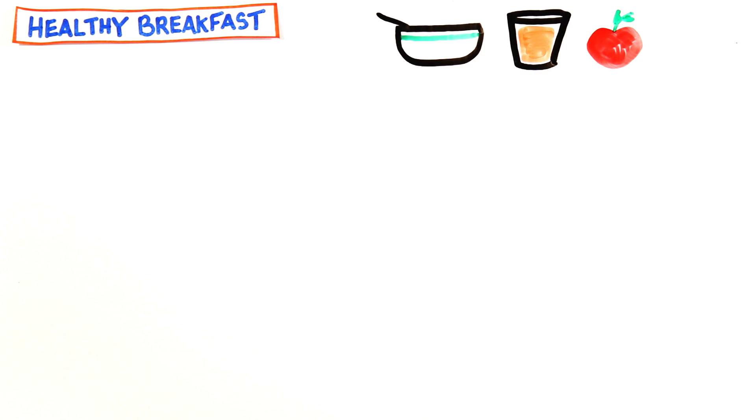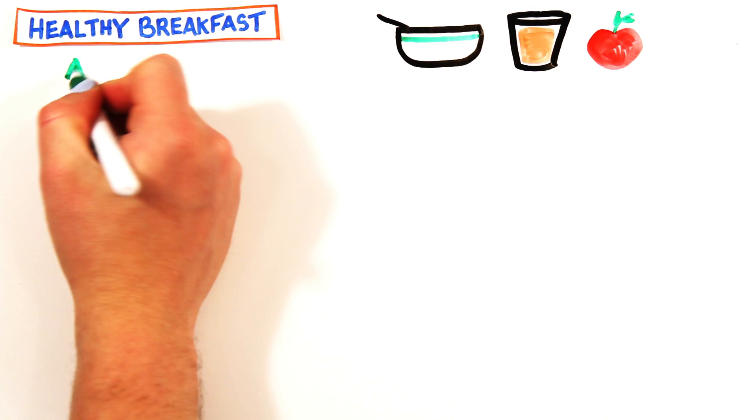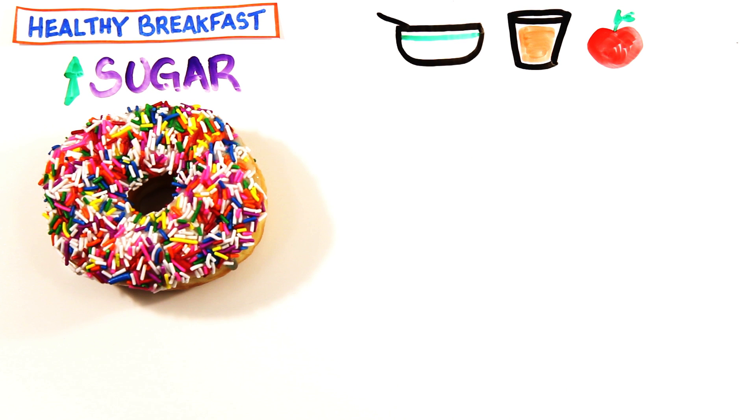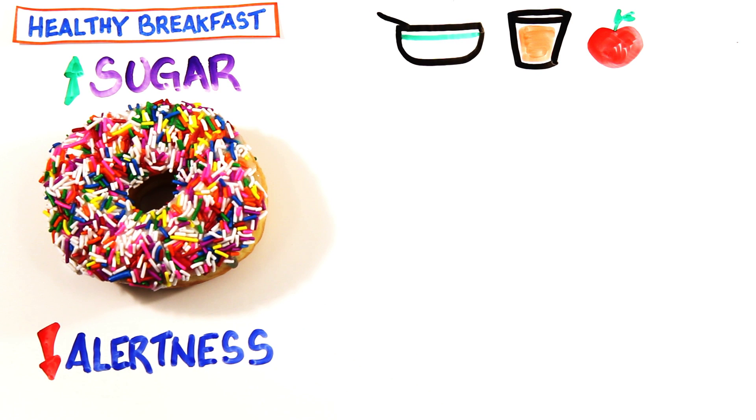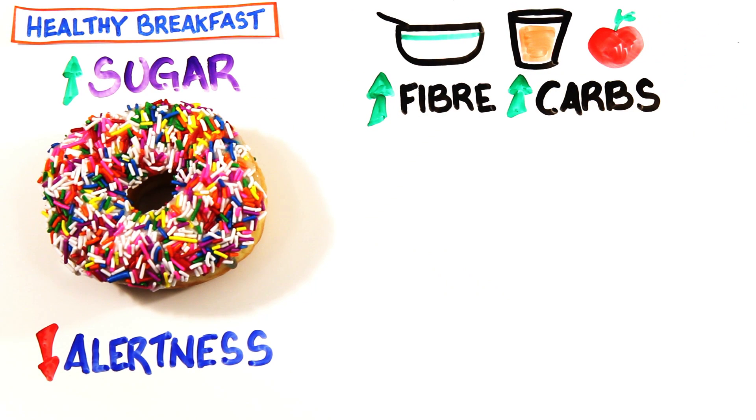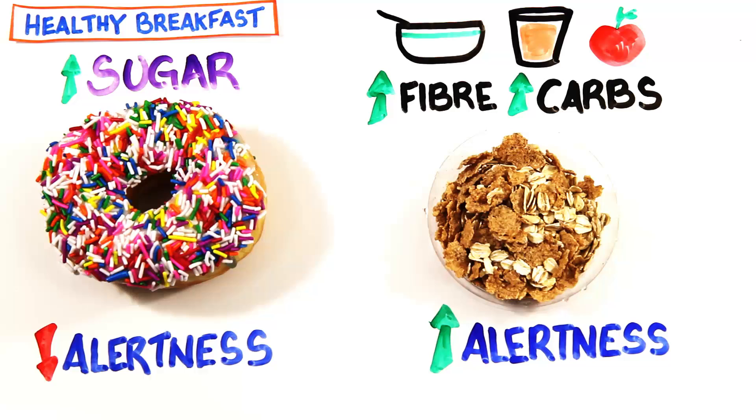Four, eat a healthy breakfast. Researchers have found that participants feel more alert after consuming a meal first thing in the morning. If the meal was high in simple sugars like a donut, the alertness wore off quickly, whereas if the meal was high in fiber and carbohydrates like oats, alertness lasted longer throughout the morning.